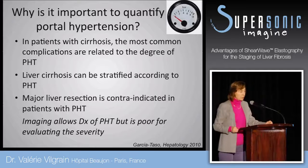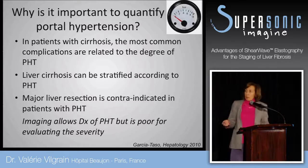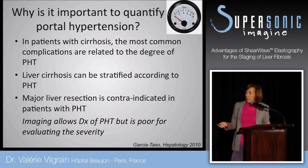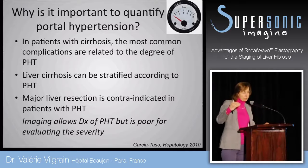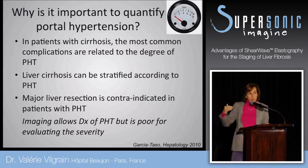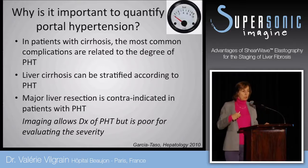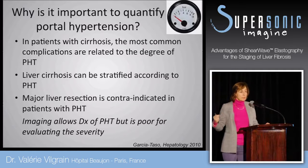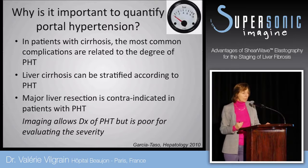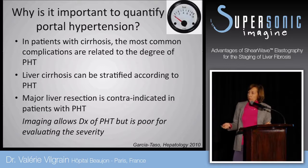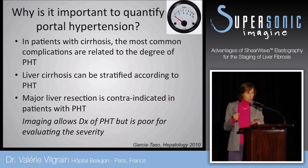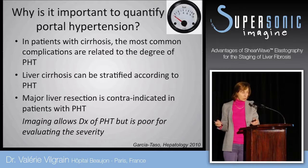My second topic is portal hypertension. Portal hypertension is a complication of cirrhosis, and in most patients the degree of portal hypertension explains the severity of complications — esophageal varices, ascites, and so on — complications that hamper the patient's prognosis. Therefore, liver cirrhosis can be stratified according to the degree of portal hypertension.